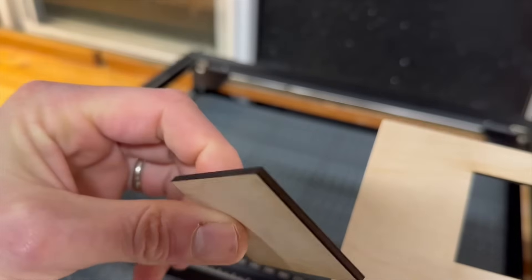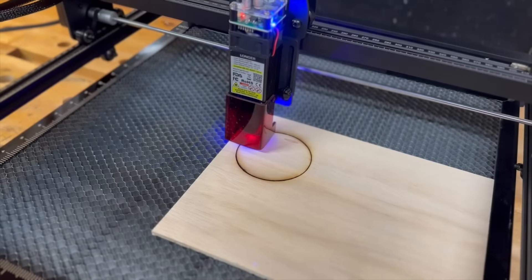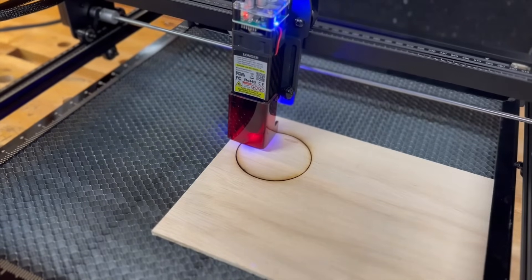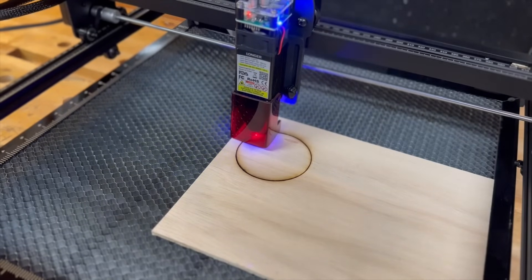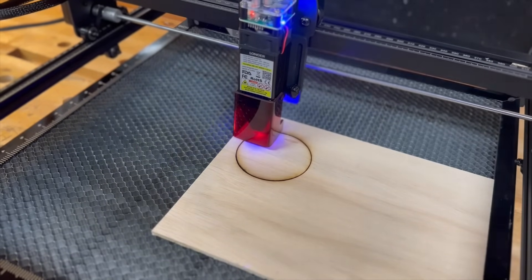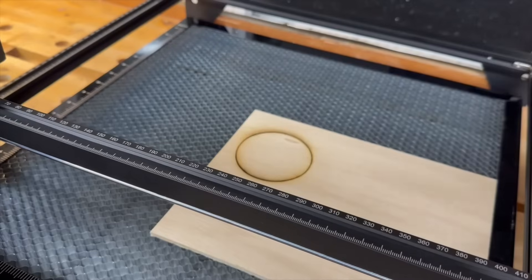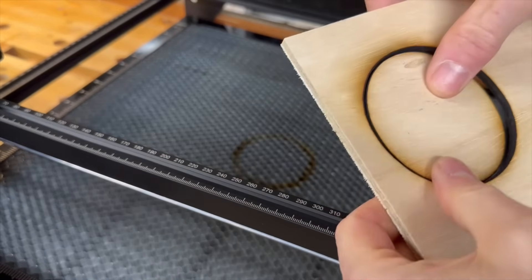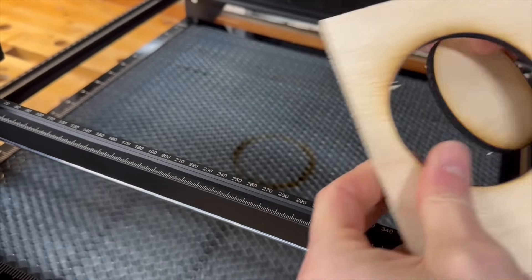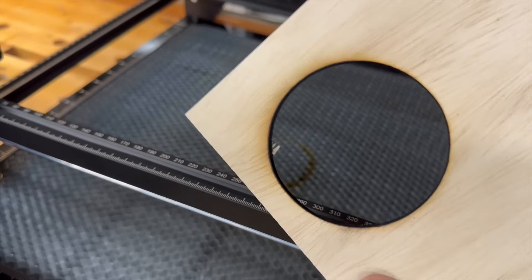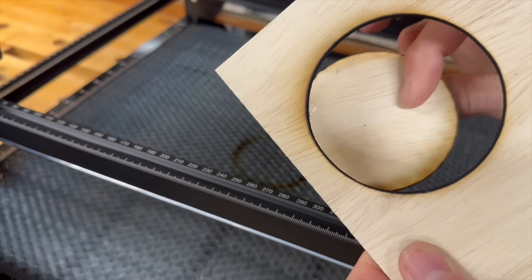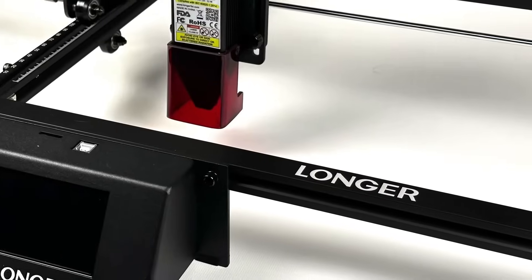I also want to point out that I did buy an aftermarket honeycomb cutting surface which is what you see underneath the machine right now. Something like this is pretty handy for cutting. It definitely protects your tabletop and makes for a more efficient cut. Here I cut through some 8mm plywood. I did it in two passes and I think if I had tweaked with the settings a little bit more I could have gotten the cut even cleaner.